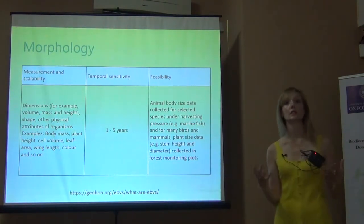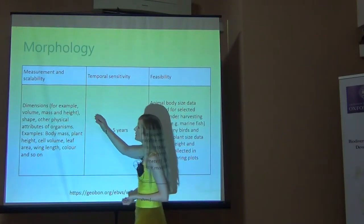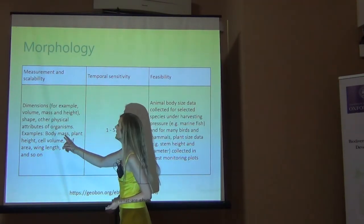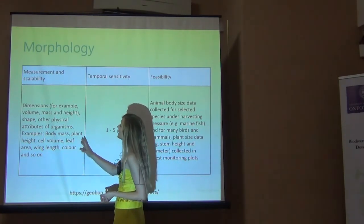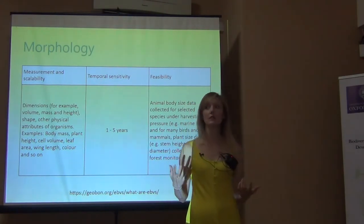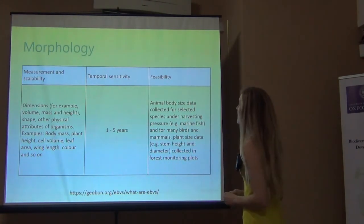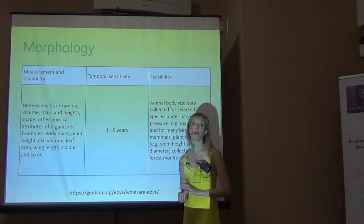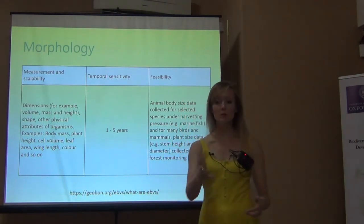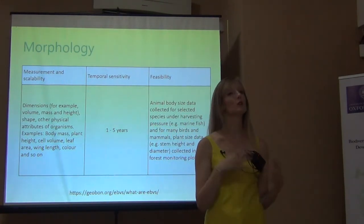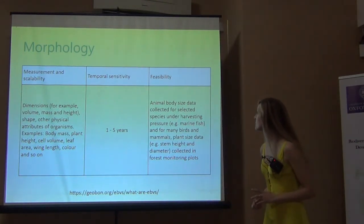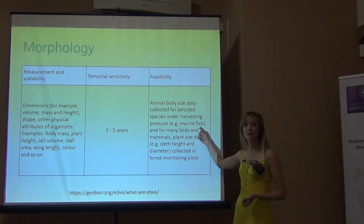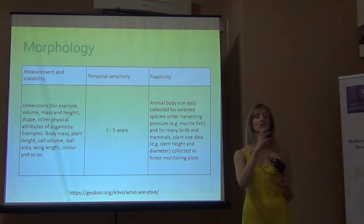Morphology means what the organism looks like. Specific variables include volume, mass, and height; shape and physical attributes such as plant height, cell volume, leaf area, wing length, and color — including whether color is changing through time. Temporal sensitivity for morphology is anywhere from one to five years, with room to look at traits in a snapshot or over a longer period. Selected species are already being measured for body size, especially marine fish — like the example of how marine fish are changing in body size through time.